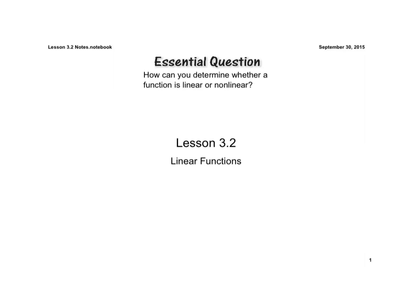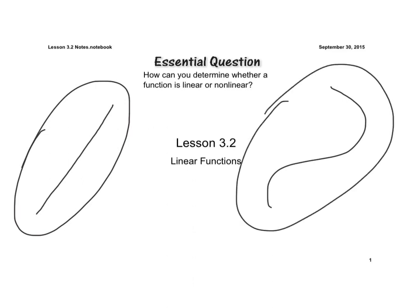So the essential question is: how can you determine whether a function is linear or nonlinear? If you just think about it, linear means a straight line. Nonlinear, okay, so pretty simple. We want to know, is a graph or an equation going to represent a line or something nonlinear?